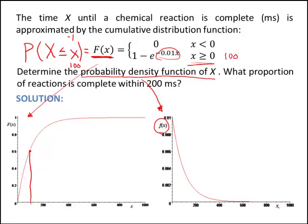And again, x is completion time of the reaction in milliseconds. So if I wanted to find the probability of reaction time is complete by 100 milliseconds, I could go up here and find the area under the curve between 0 and 100.